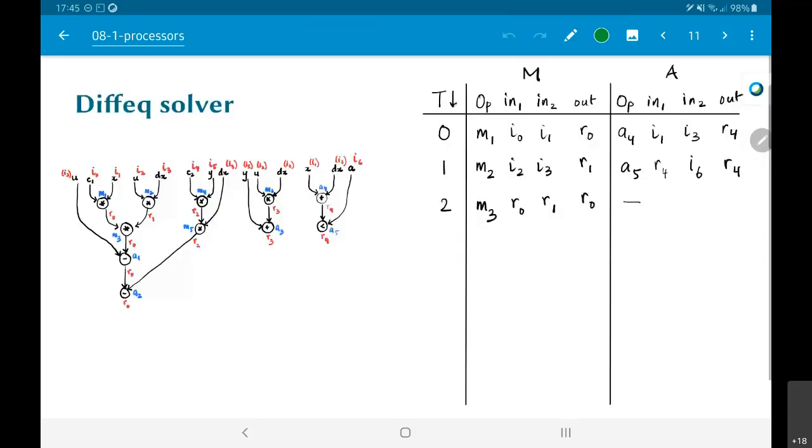Move forward to the next time step. Now, what I have is M3 can get scheduled on the multiplier. What are the inputs to M3? It's R0 and R1 and output is R0. And at that time instant, I find that I don't have any operations that I can schedule on the adder. So, I'm just leaving it blank.